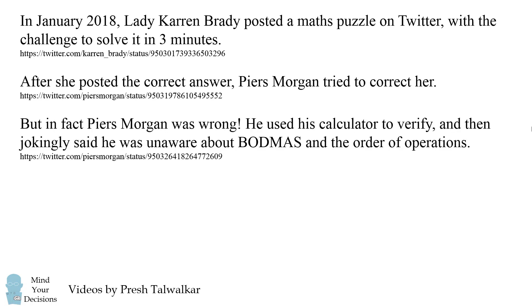As it turned out, Piers Morgan is the one who is wrong. He used his calculator to verify and then jokingly said he got the wrong answer because he was unaware about BODMAS and the order of operations.